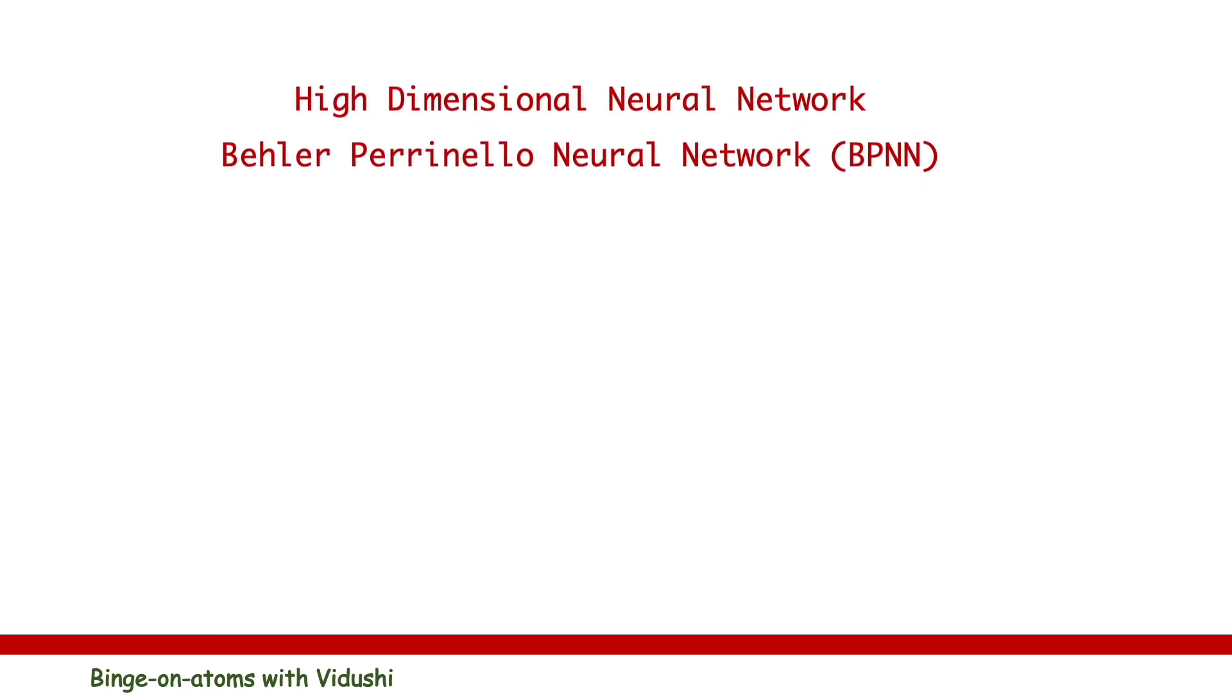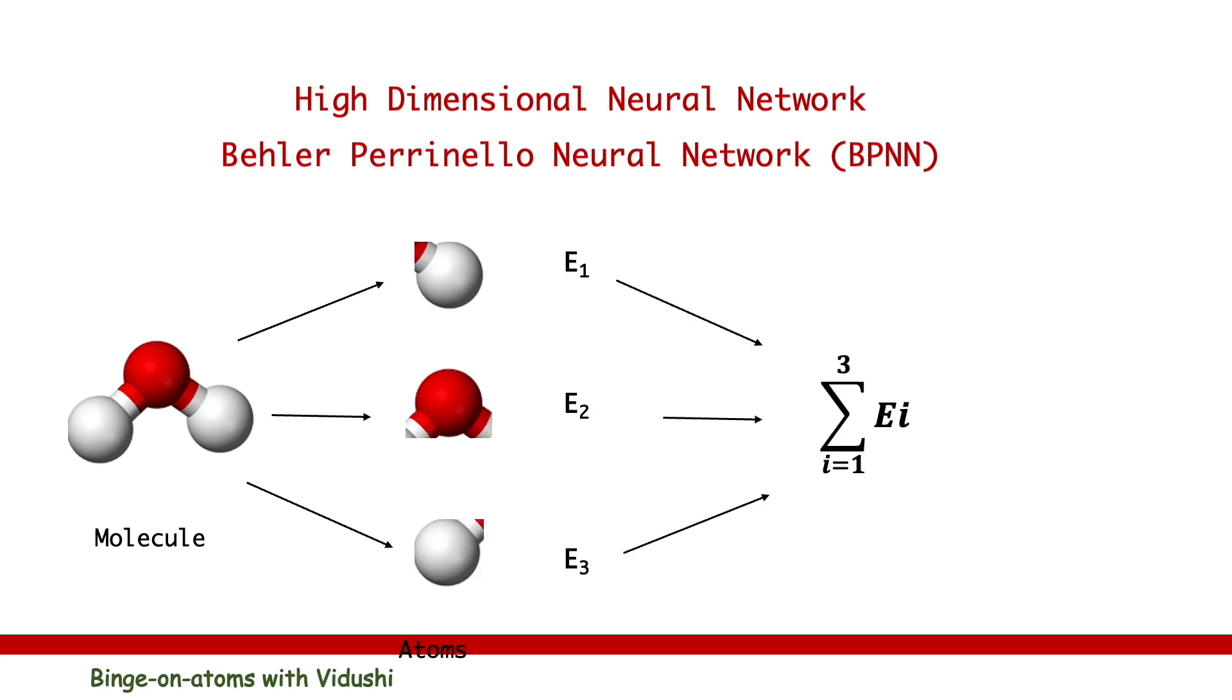Now let me describe the architecture of BPNN for molecular systems. This model breaks down the problem from molecular level to atomic level in a molecular system only to combine it in the end. The main idea is to represent the total energies E of the system as the sum of atomic contributions EI, an approach that is typically also used in empirical potentials.